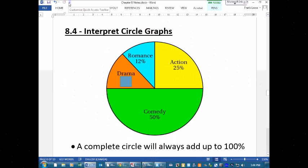8.4, last section, sort of the last section in chapter 8. This is on interpreting circle graphs. Some fairly straightforward stuff, but it also ties in calculating percent of a number to a large degree.